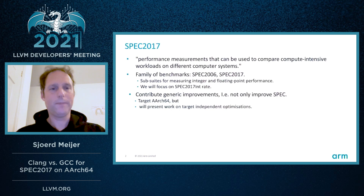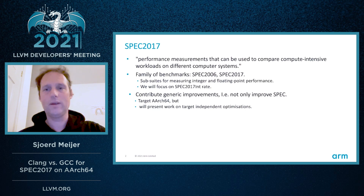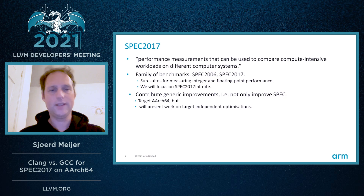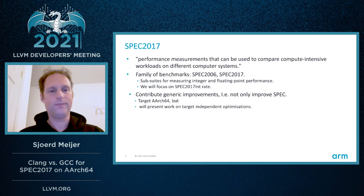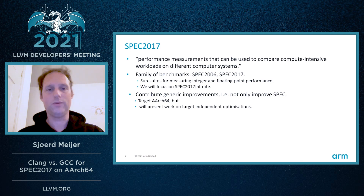A little bit about the benchmark SPEC 2017 — using a quote here, it's used for performance measurements that can be used to compare compute-intensive workloads on different computer systems. It's actually a family of benchmarks: there's a SPEC 2006 version and a SPEC 2017 version. The 2006 version is deprecated now, so 2017 is the latest one, which we also focus on. There are sub-suites for measuring integer and floating point performance, and we'll focus on the integer one.